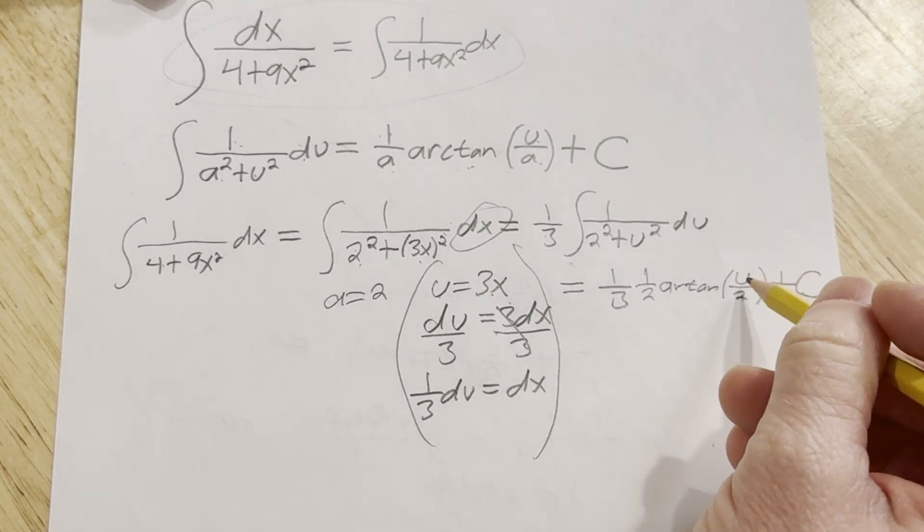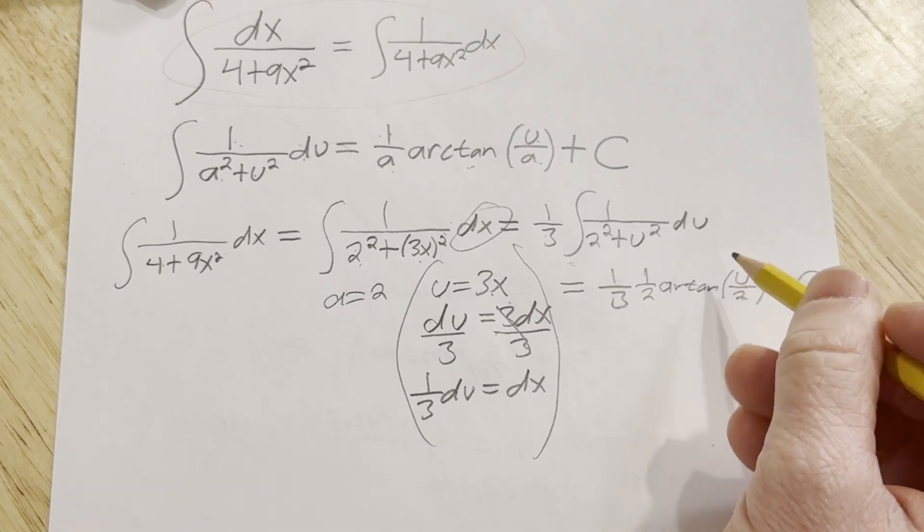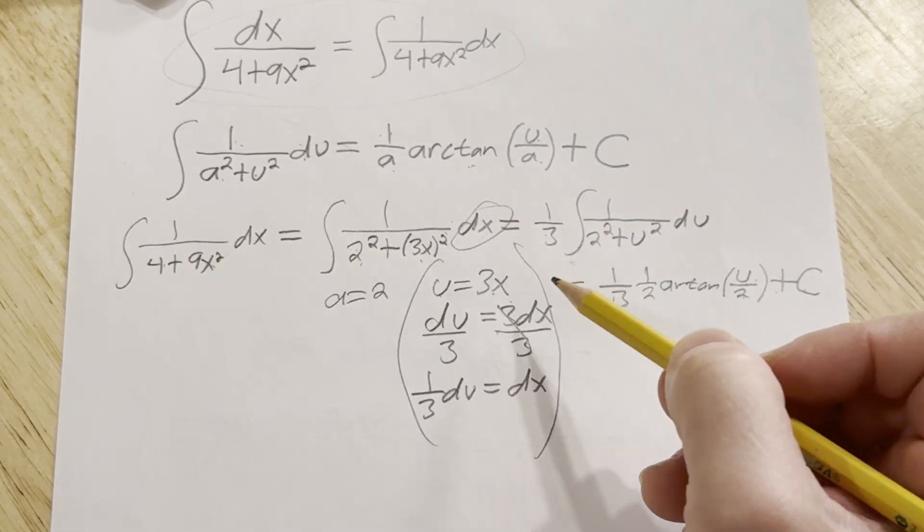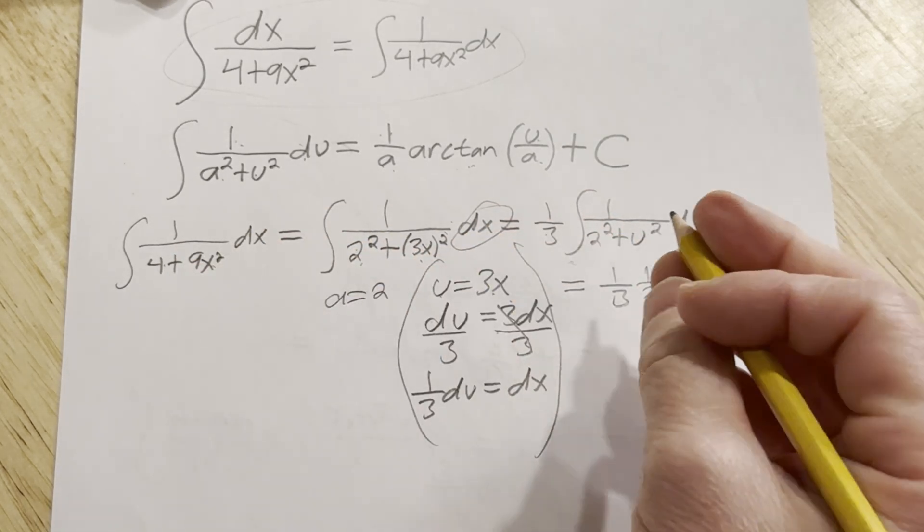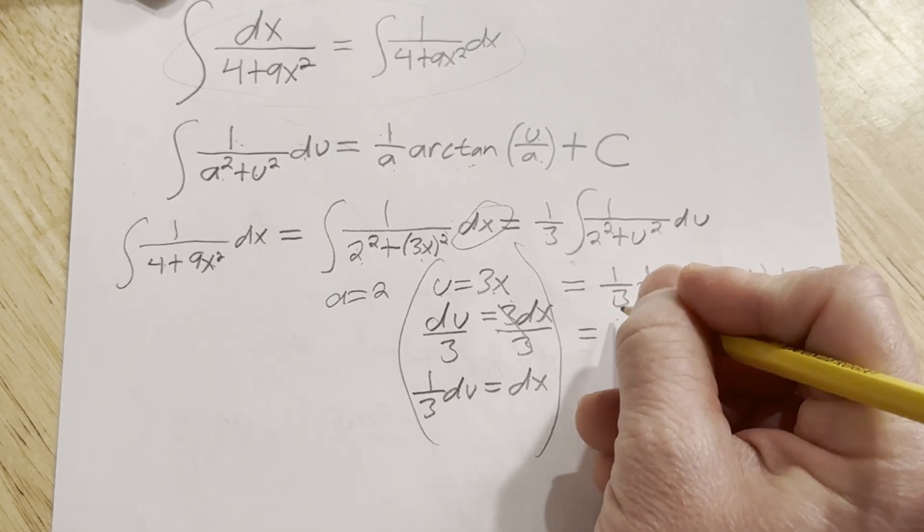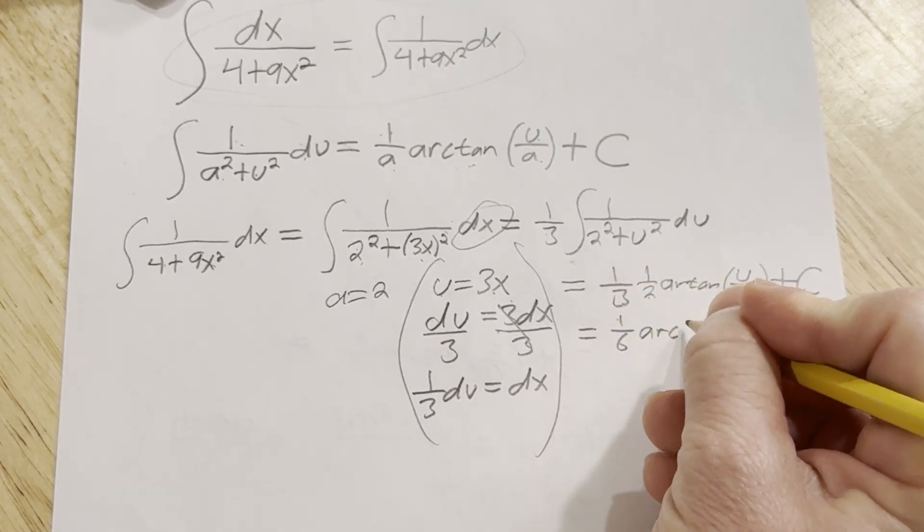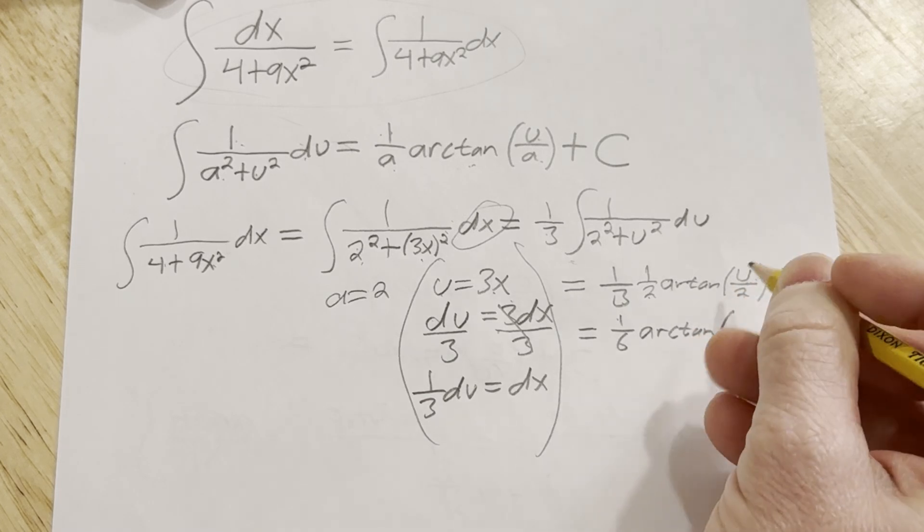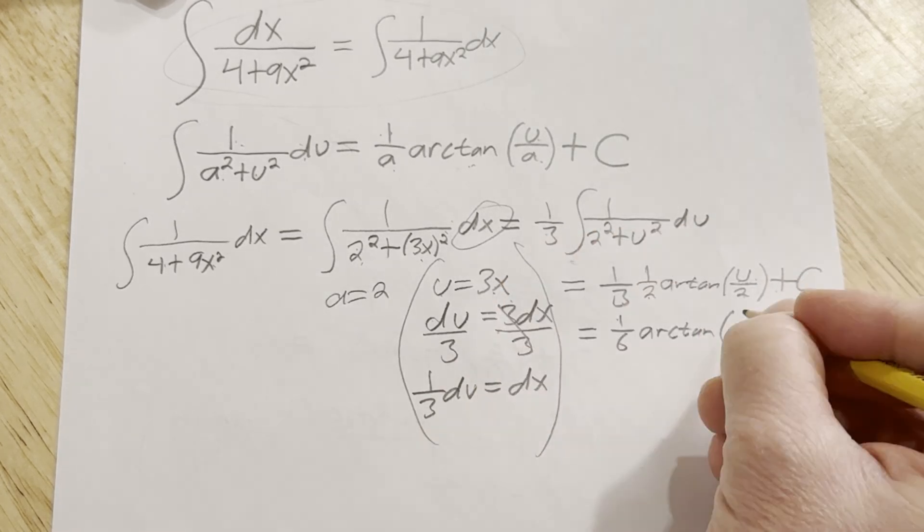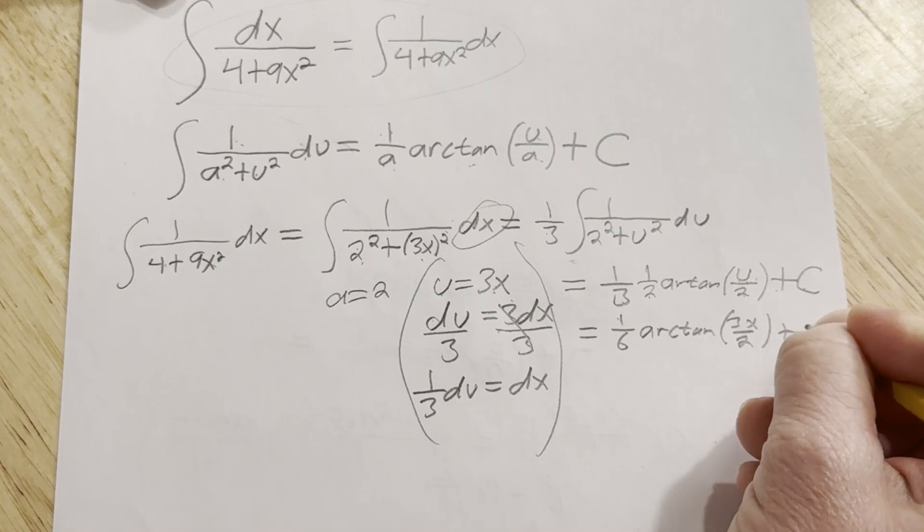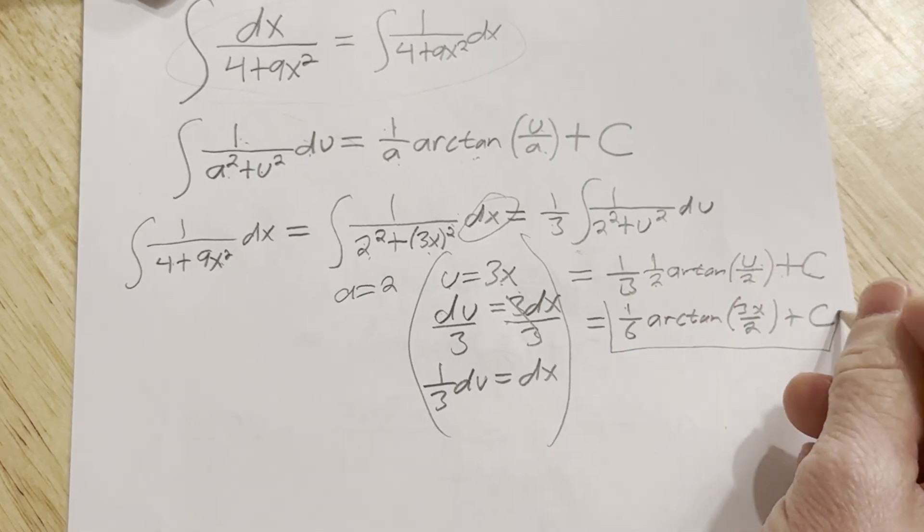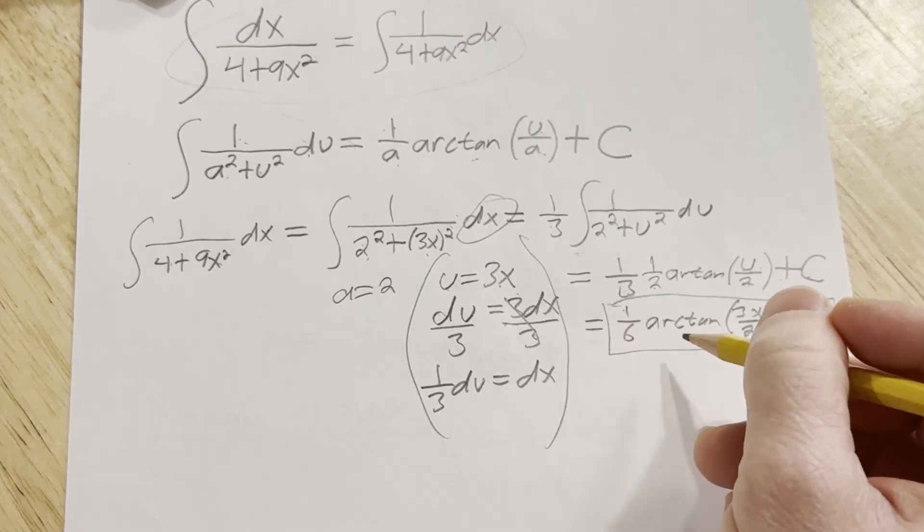But we're not done because here we have u and the original problem involved x in the integrand. So we have to go back to the original variables. This is equal to, well, 3 times 2 is 6. We get 1/6 arc tangent. But instead of u now, it's going to be 3x over 2 plus c, which is our arbitrary constant of integration. And that would be the answer.